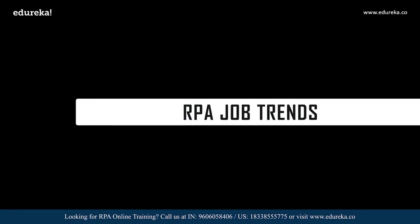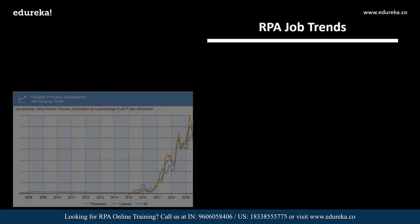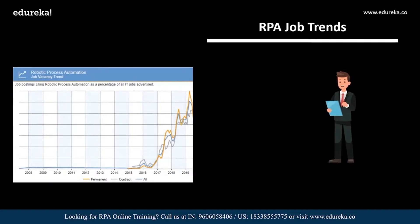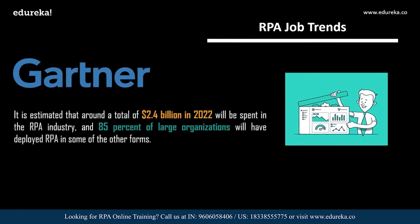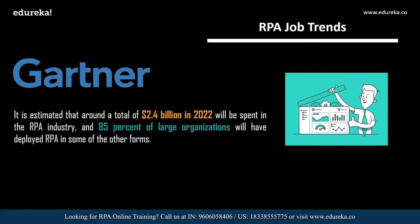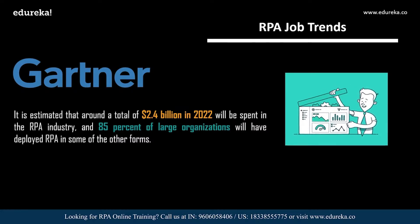Let me take you to the job trends of an RPA developer. As you can see on my screen, the number of RPA developer jobs in the United Kingdom is increasing on a large scale. RPA developer career opportunities will only shoot through the roof, with both startups and well-established companies such as IBM, Infosys, and KPMG offering lucrative salaries. According to Gartner, around 2.4 billion US dollars is estimated to be spent in the field of RPA by 2022, and 85% of large organizations will have deployed RPA in some form. All industries are looking for professionals who can adapt RPA technology and automate manual tasks.